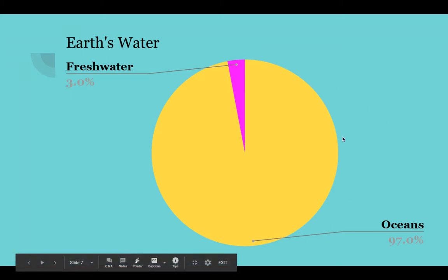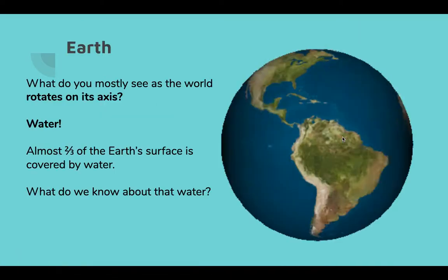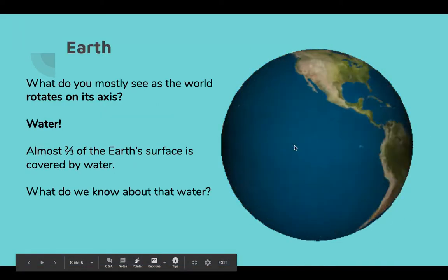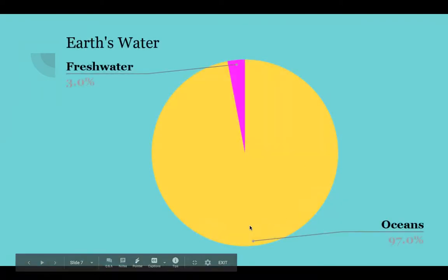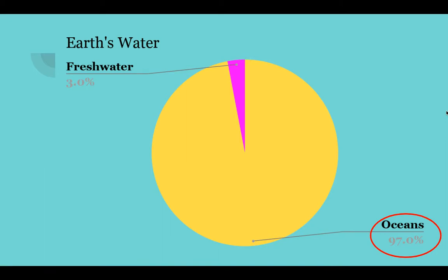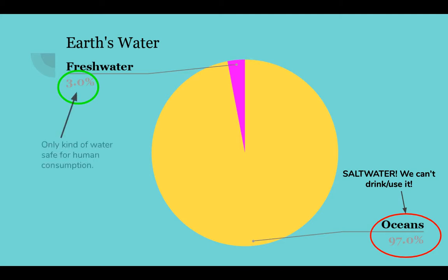This pie chart represents all of the water on earth — all of it. When we break it down, we see that 97% of the earth's water exists in the oceans, which leaves only 3% as fresh water. That's important because ocean water is salt water — we can't drink it safely or use it for most of our needs. Fresh water is the only kind safe for human consumption.